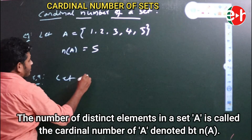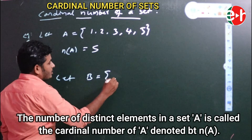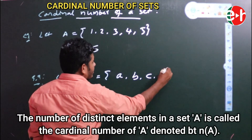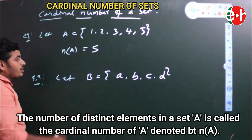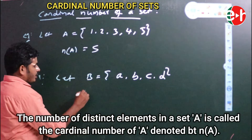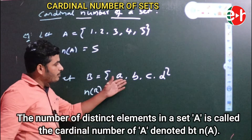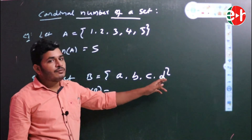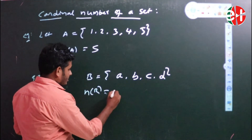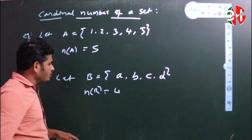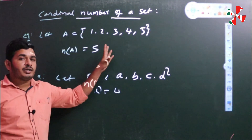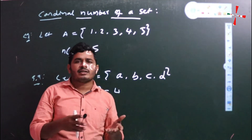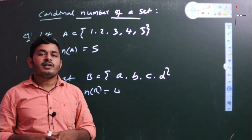One more example: let B = {a, b, c, d}. What is the cardinal number of set B? n(B) equals the number of elements present in this set. There are 4 elements, so n(B) = 4. The number of elements present in a set is nothing but the cardinal number of that set.